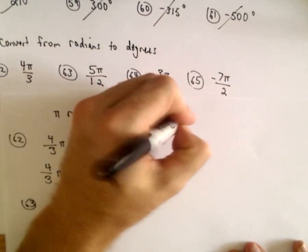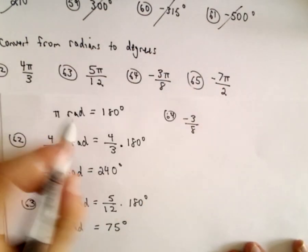For 64, I'm just going to multiply both sides by negative 3 eighths of my equation here.